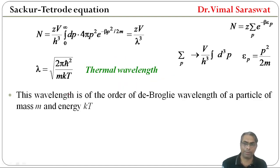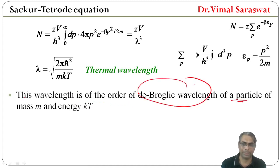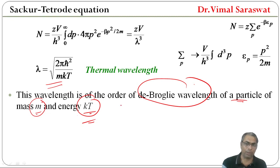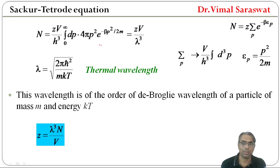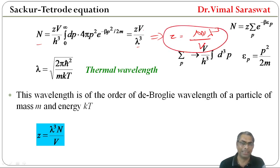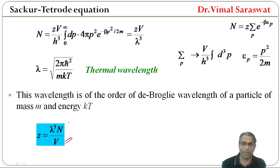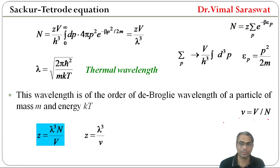This thermal wavelength is of the order of the de Broglie wavelength of a particle of mass m and energy kT. From this, Z = N·λ³ / V, so Z = λ³ / v where v = V/N is the volume per particle.